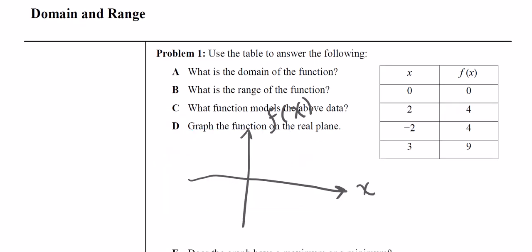Part d, let's go ahead and graph this. Remember, these are your x values and these are your y values. Here's the first point, 0, 0. Here's the next point, 2, 4. Here's the third point, negative 2, 4. Here's the final point, 3, 9.